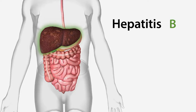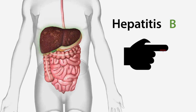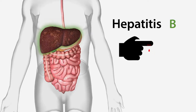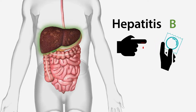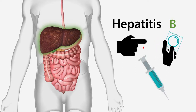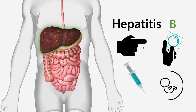Chronic hepatitis B can lead to progressive injury and scarring, also known as fibrosis, in the liver. Hepatitis B can be transmitted through blood, unprotected sex, unsterile or contaminated needles, or from an infected woman to her newborn child during childbirth.